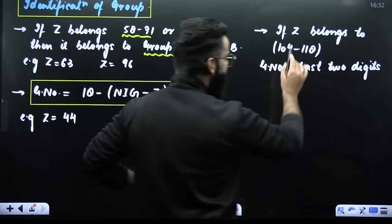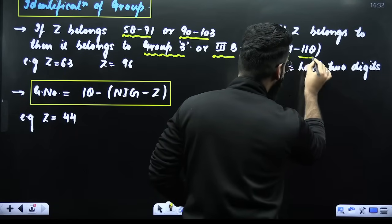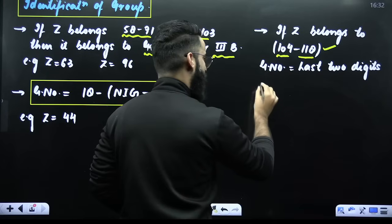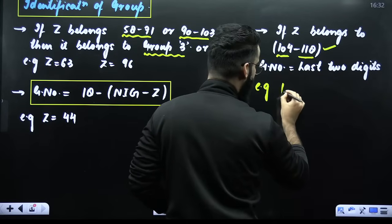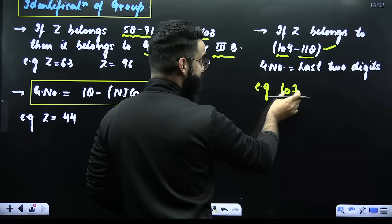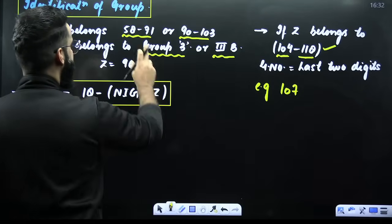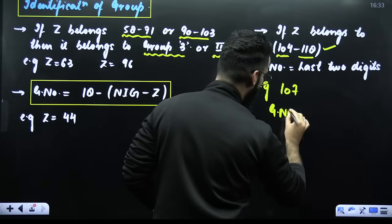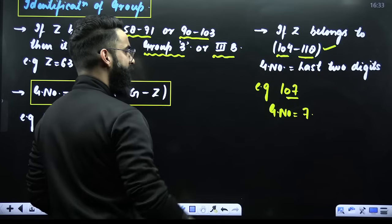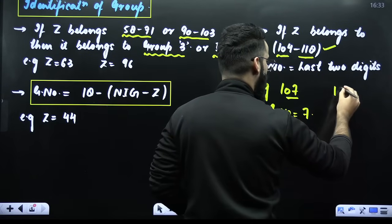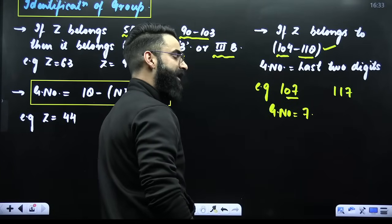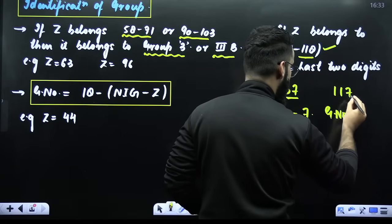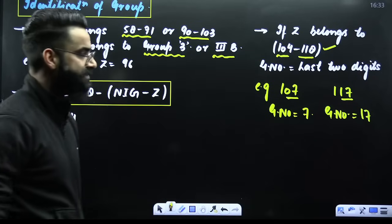Second rule: if the atomic number belongs to 104 to 118, then the group number equals the last two digits of the atomic number. For example, atomic number 107 — last two digits give group 7. Atomic number 117 — last two digits give group 17.